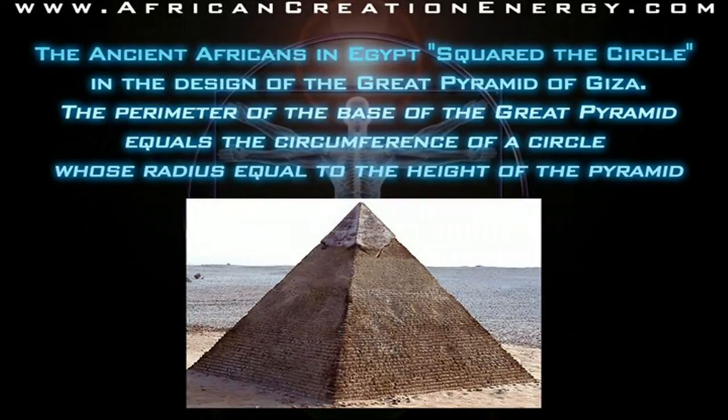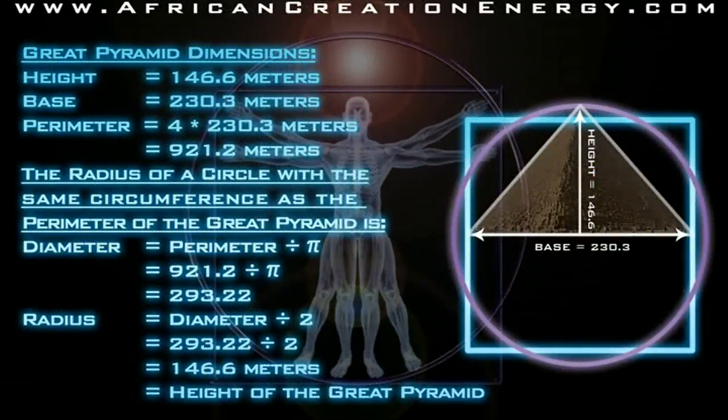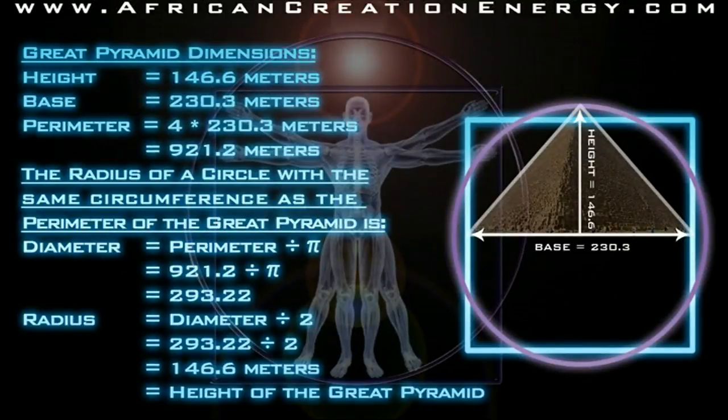Now in my video on Pyramid Mathematics, it gives the dimensions of the Great Pyramid of Giza. So the height of the Great Pyramid of Giza is 146.6 meters. The base, meaning one side of the square base of the pyramid is 230.3 meters, which means the overall perimeter of the Great Pyramid is 921.2 meters.